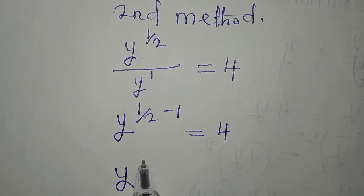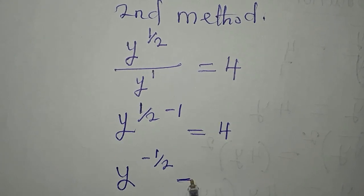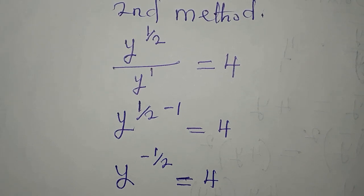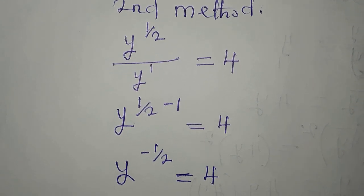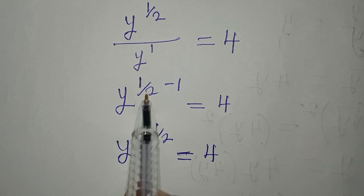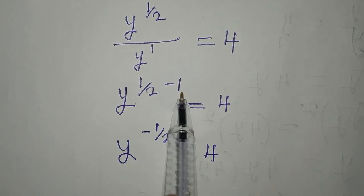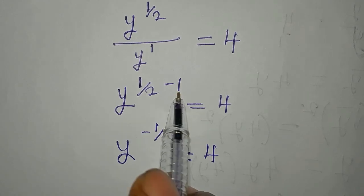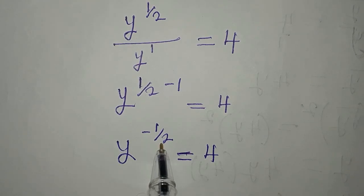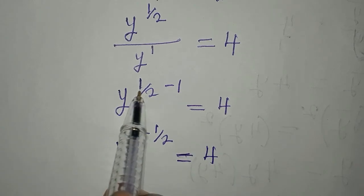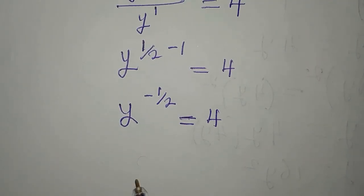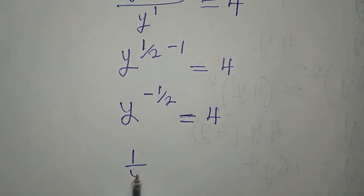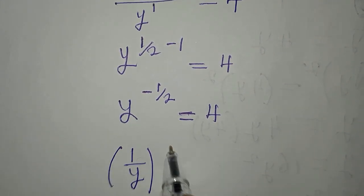1 over 2 minus 1 is minus 1 over 2, so this is giving us y to the minus 1 over 2 which is equal to 4. Now you might be wondering why is it giving us minus 1 over 2. This is because this is bigger than this, and half plus half will give us 1, so take half out of 1 you get another half. So this time around is negative because this is less than this.